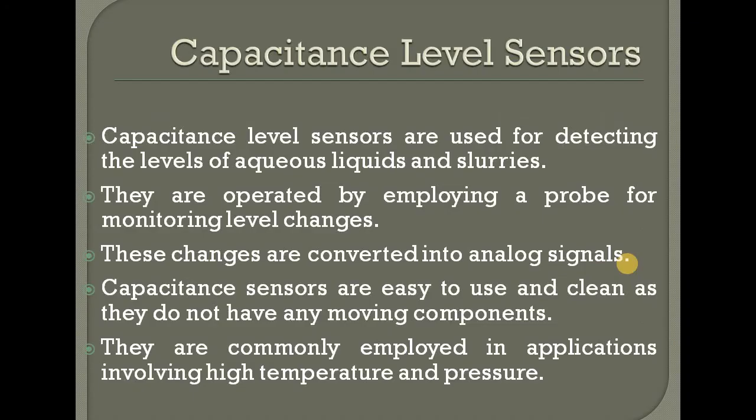Capacitive level sensor is a discrete or point level sensor. These sensors are used to detect the level of aqueous liquids and slurries. They are operated by employing a probe for monitoring level changes, and those changes are converted into analog signals. Capacitance sensors are easy to use and clean as they do not have any moving components.